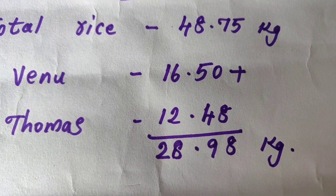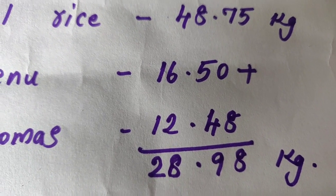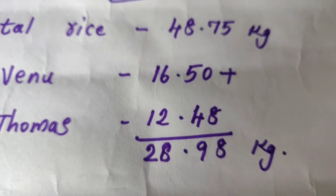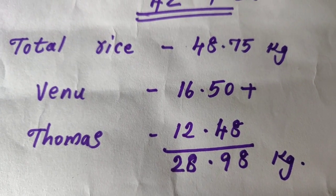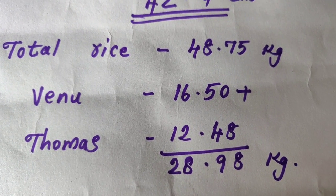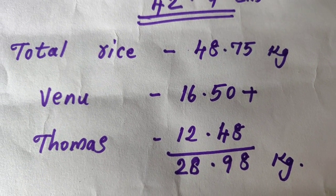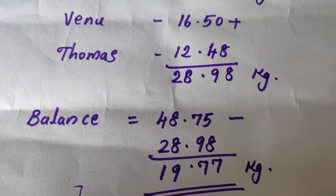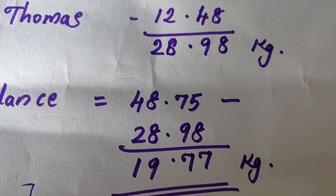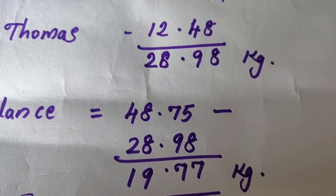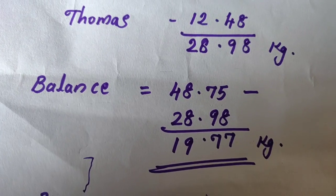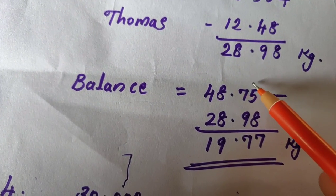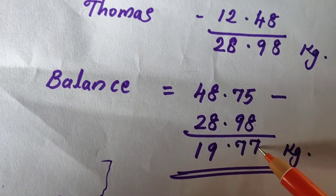Adding Venu's 16.50 and Thomas's 12.48: 8 plus 0 is 8; 5 plus 4 is 9; then carrying through gives 28.98 kg. Now subtracting from total: 48.75 minus 28.98. Working through: 15 minus 8 is 7, then continuing the subtraction to find the remaining rice.